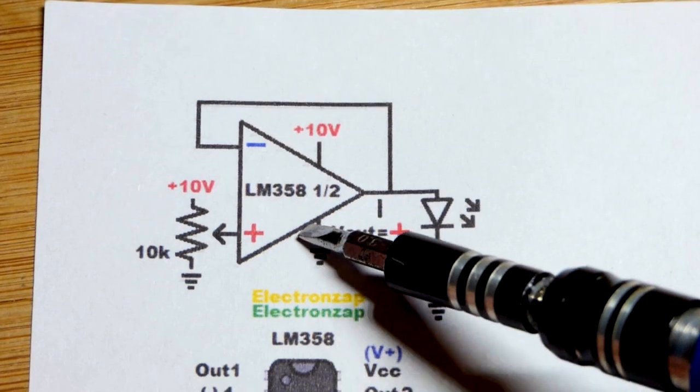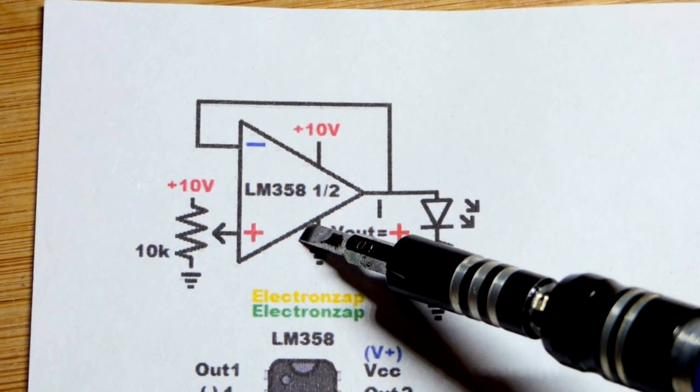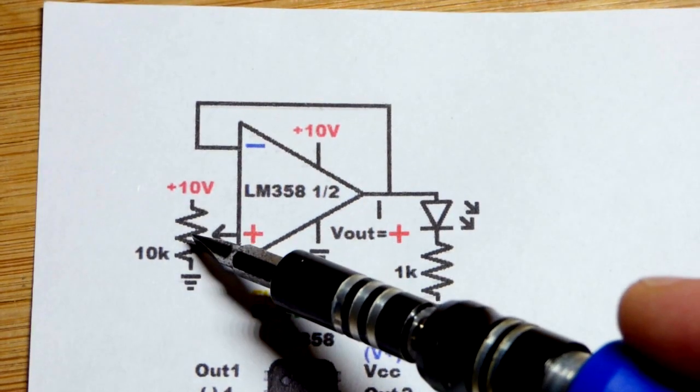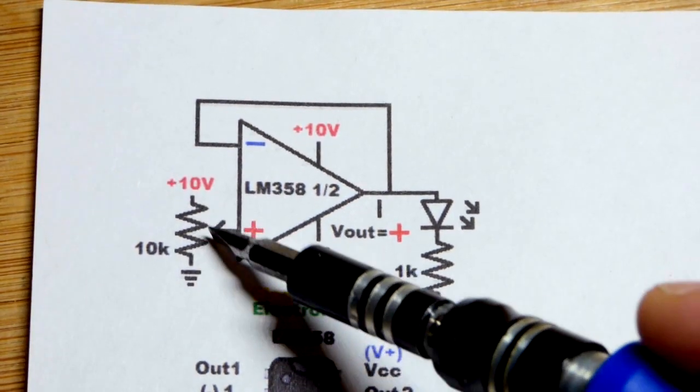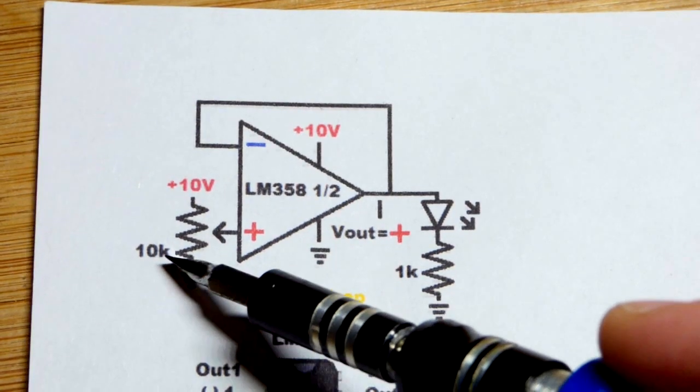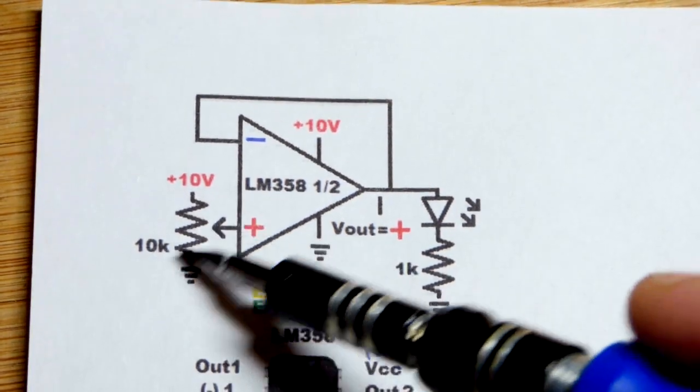And so here we have the schematic to help illustrate the circuit right there. We have the non-inverting input. We had the trim pot there. There was a long white jumper going from the trim pot. The two ends were to the power supply. It was a 10 kilo ohm trim pot. The exact value doesn't matter at all.